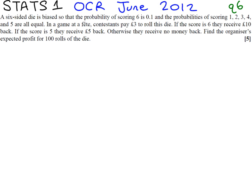It's quite a wordy question, so you might want to underline some key information in your exam. We've got a six-sided dice, it's biased. The probability of scoring a 6 is 0.1. The possibilities are 1, 2, 3, 4, 5 as well as a 6, as you'd expect in a dice, and all these other probabilities are the same.